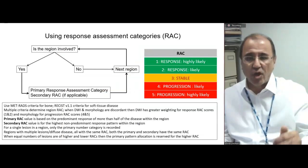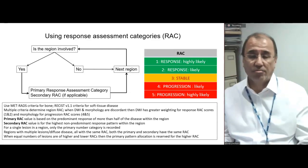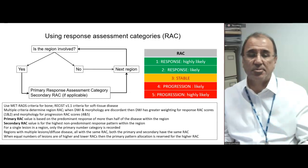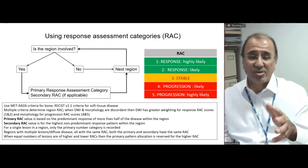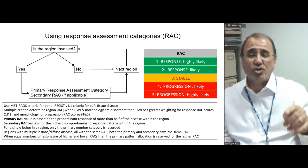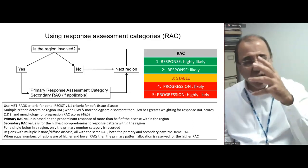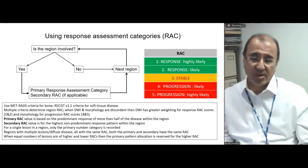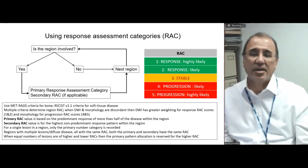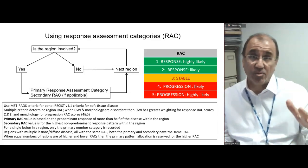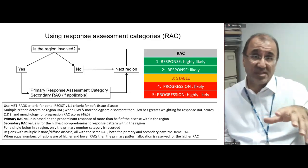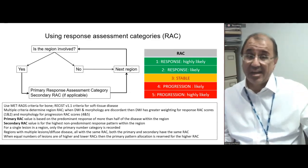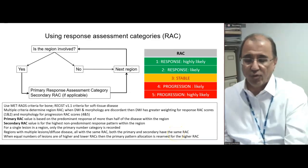For each site, the first thing you decide is whether disease is present. If so, you assign two response assessment categories: the primary and the secondary. The primary response assessment category — one to five — refers to the dominant predominant response in that region. The secondary response assessment category is the highest non-dominant response. If less than 50% of lesions show a mixed response but some lesions are progressing while others improve, the progression gets the higher score — just like the Gleason scoring system.